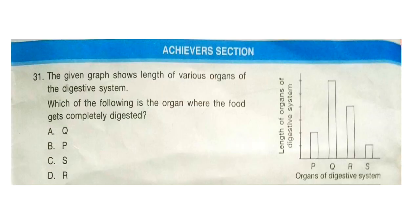The next section is the Achiever Section. Question 31: The given graph shows the length of various organs of the digestive system. Which of the following is the organ where the food gets completely digested? You have to find out the organ where food gets completely digested, which is the small intestine and it is the longest. So the answer will be option A, that is Q.